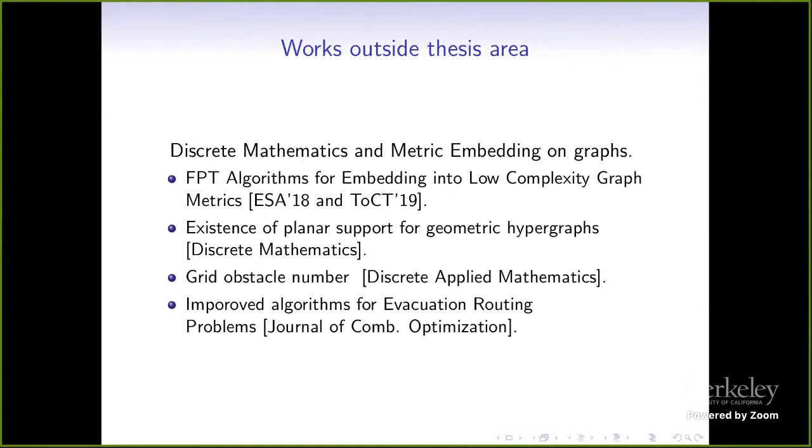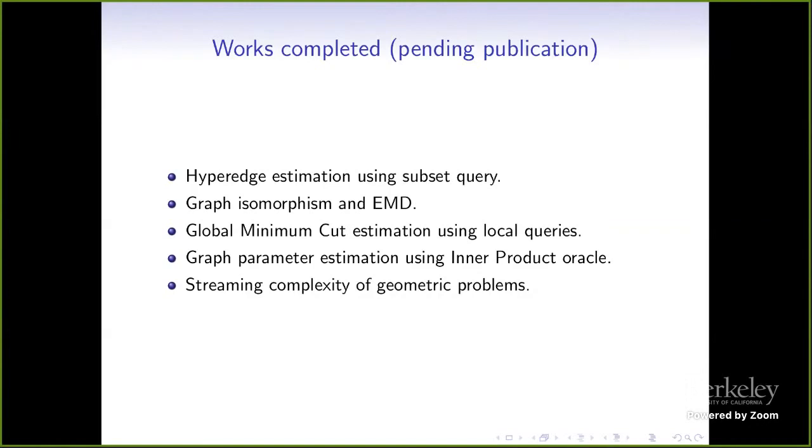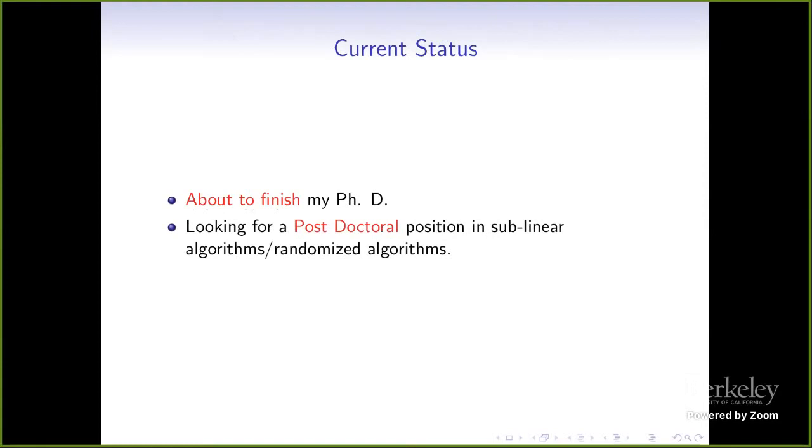So, this slide shows five of my published work in the area of sublinear algorithm. And all these things are going to be part of my thesis. Apart from sublinear algorithm, I got a chance to work a little on discrete mathematics and metric embedding problem, where I was fortunate to get these four publications. Apart from these publications in sublinear algorithms and discrete mathematics, metric embedding, I have also some unpublished work currently which are either submitted or going to be submitted in the near future. So, now I would like to conclude my talk by saying that I am about to finish my PhD in the near future and currently looking for a post-doc position broadly in the area of randomized algorithm. Specifically, I will be fortunate if I get some post-doc position.